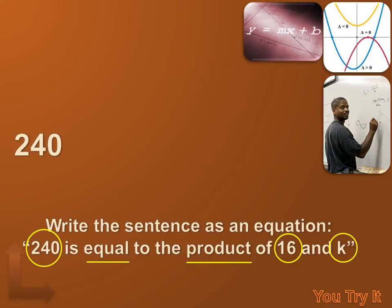Well, I can make that into an algebraic expression. It's going to read 240. I just bring that 240 up. Just bring it right up to there. And then it says is equal to. Well, I'm going to bring that equal right up and put it next to the 240. And then it says the product of 16 and K. The product means multiply. So, I'm going to multiply 16 and K.